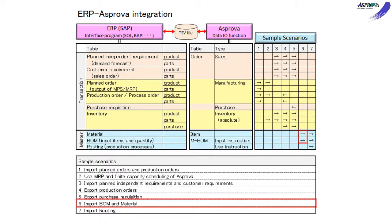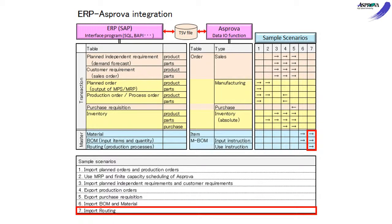Scenario 6: Import BOM and material. Scenario 7: Import routing. Each scenario is demonstrated in the corresponding videos.